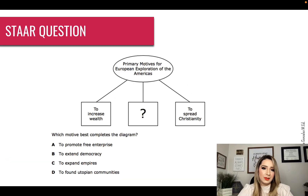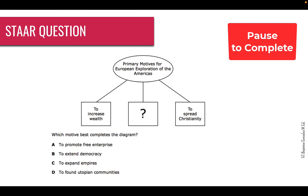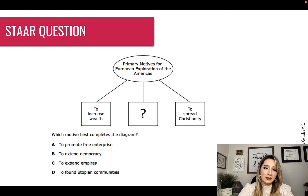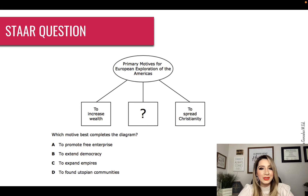Here's a star question. It has a graphic organizer and I want you to take a look at it, press pause, and after you've chosen your answer go ahead and press play. You should have answered C, to expand empires, because that's the glory part. If you notice on the three boxes — to increase wealth is gold, and to spread Christianity is God. So the only motive missing was glory, which is expanding empires.